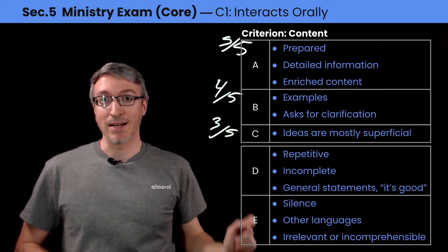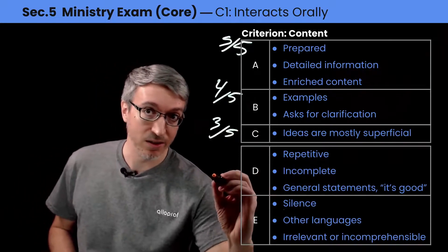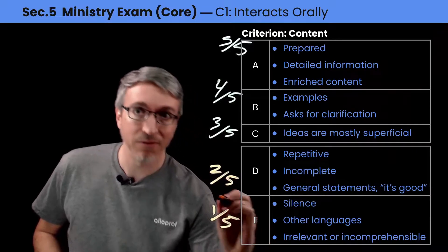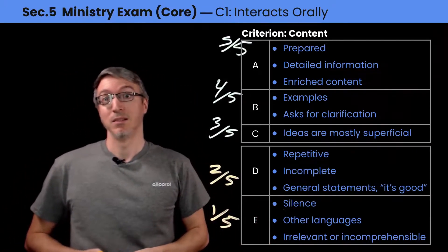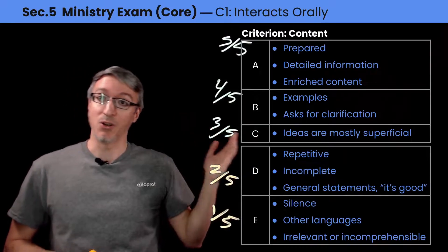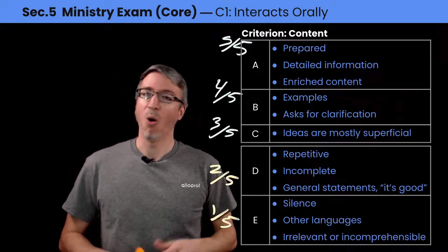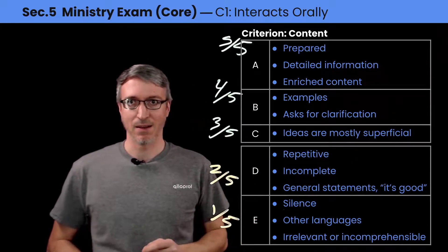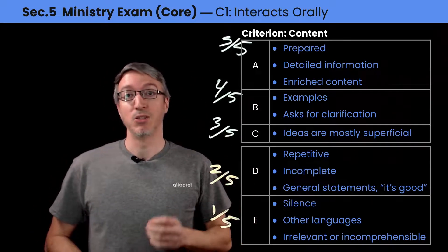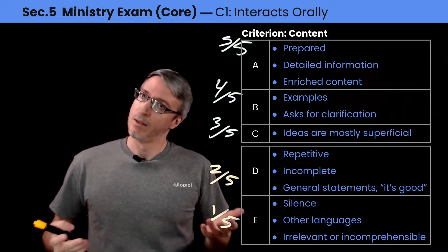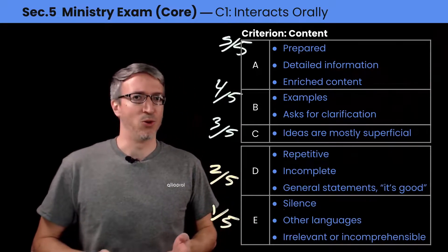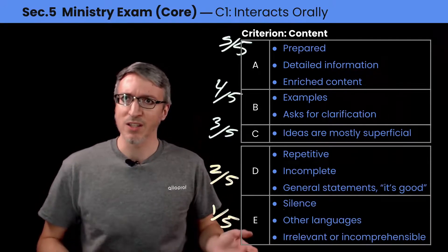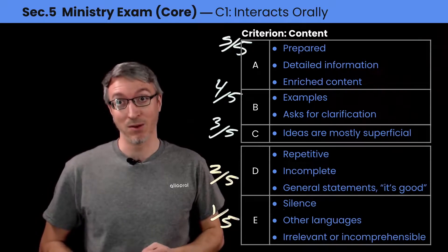When you fall into the D and E criteria — two on five and one on five — it means you're repetitive, your message is incomplete, or you say things like 'this is good' without explaining anything. One on five — just like the participation criterion — means you're silent, you don't finish your sentences, we don't understand what you say, or you switch to another language.